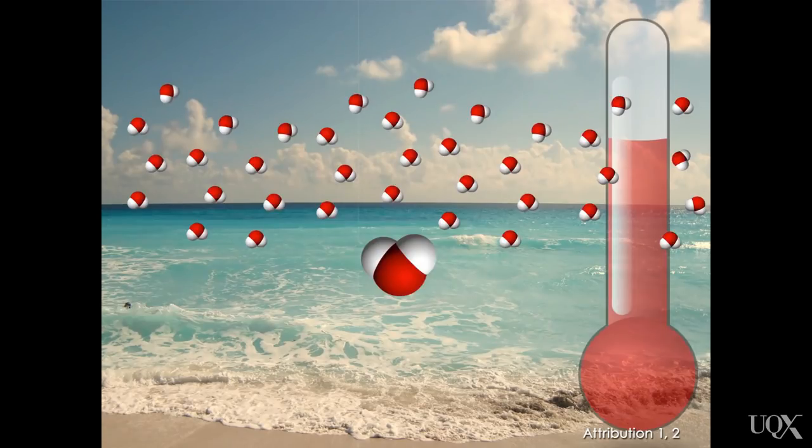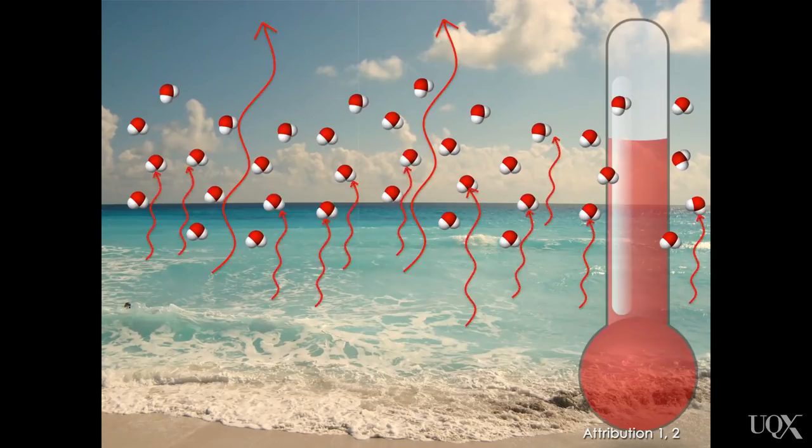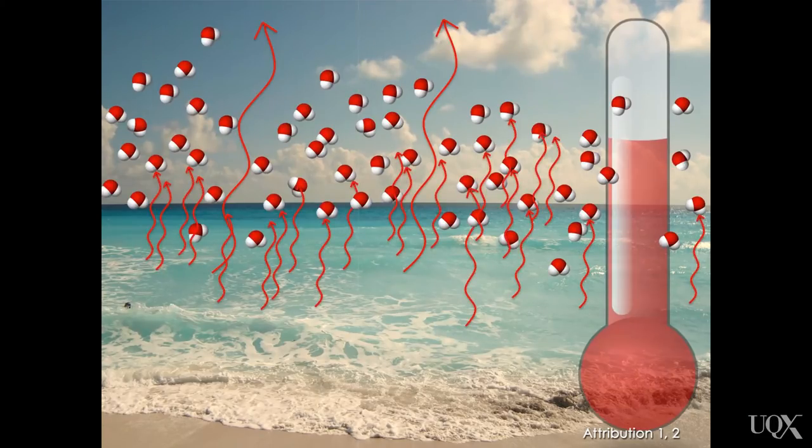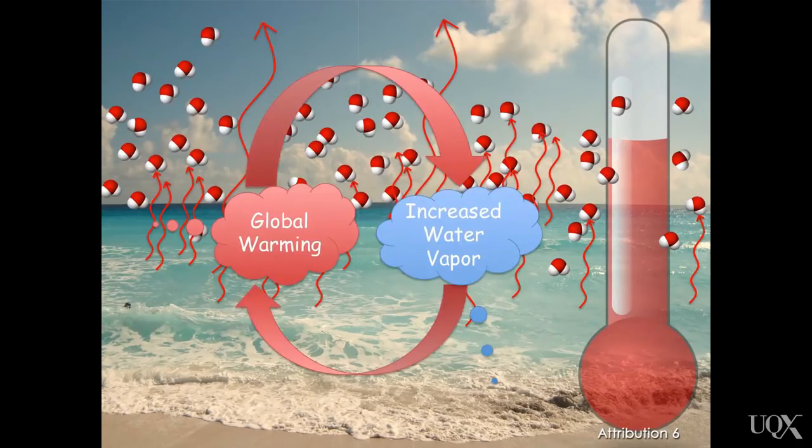As the globe warms, evaporation from the oceans causes water vapor to build up. But water vapor is a greenhouse gas, so this excess water vapor causes the atmosphere to warm even further. This allows even more water to evaporate into the atmosphere, causing an even further warming due to a stronger greenhouse effect. This is an amplifying feedback, a self-reinforcing loop.